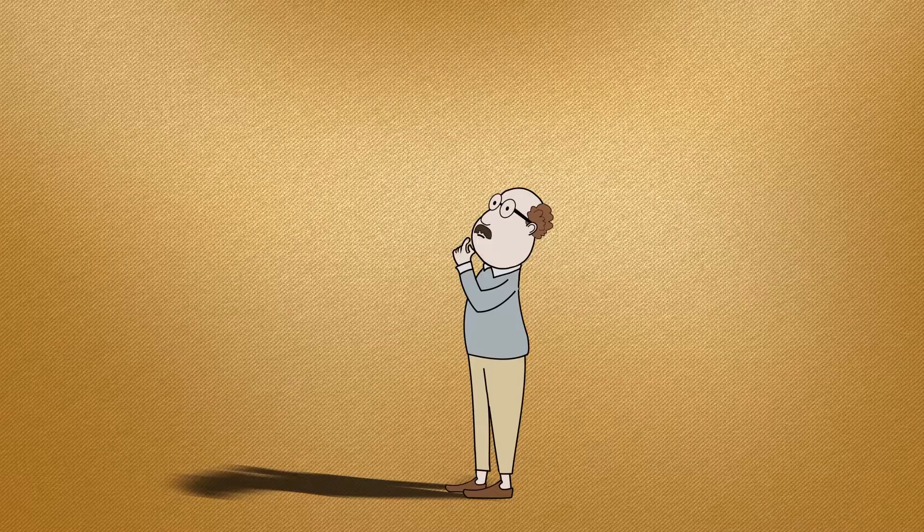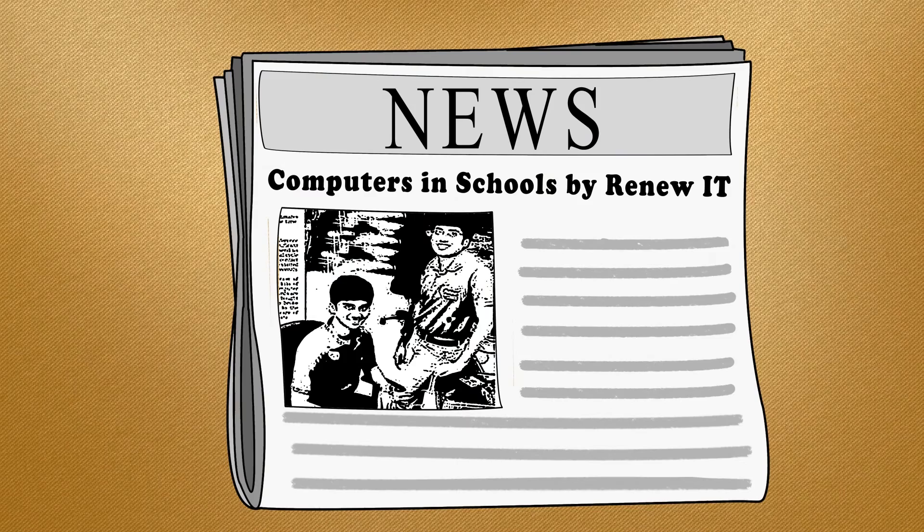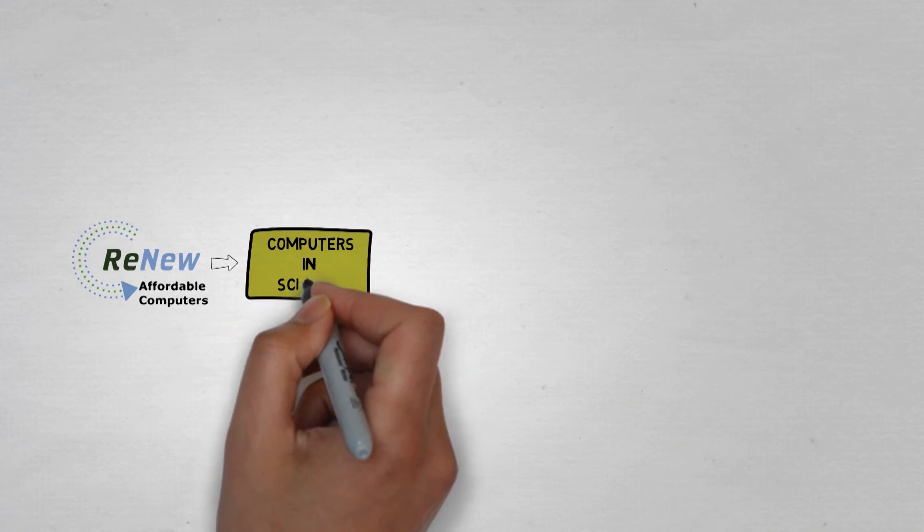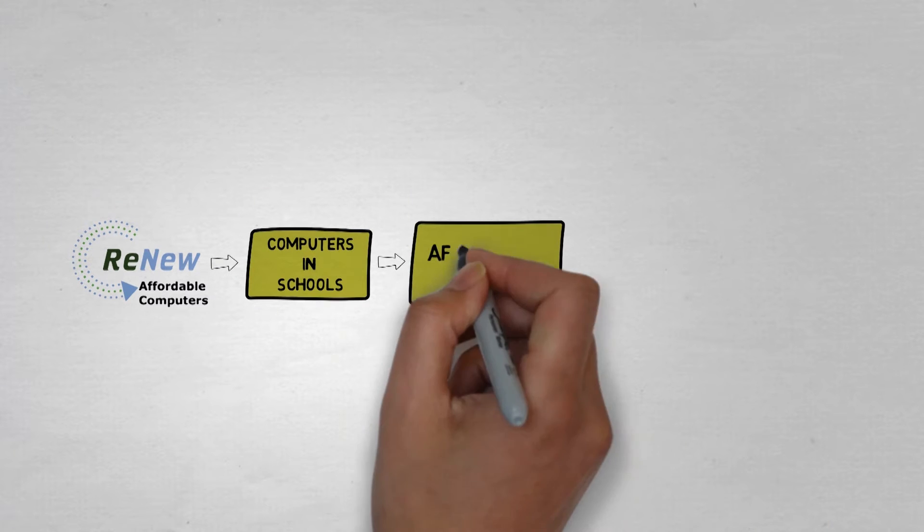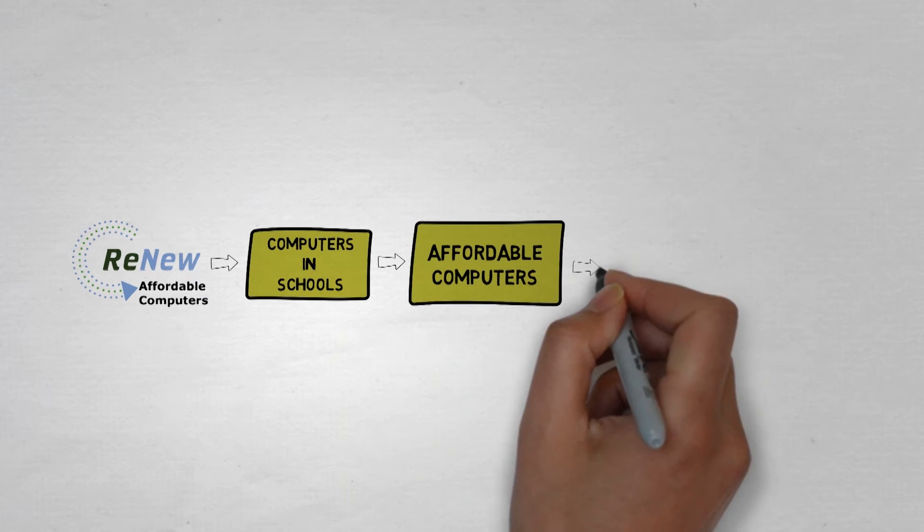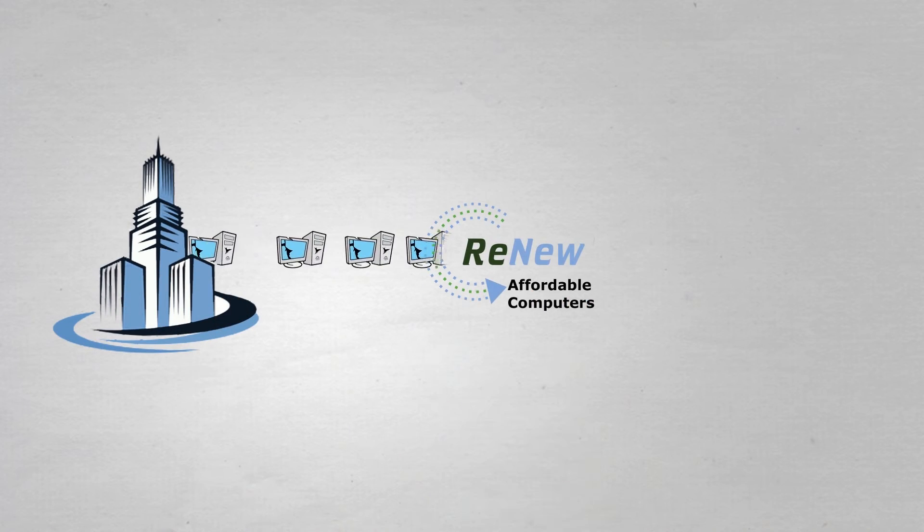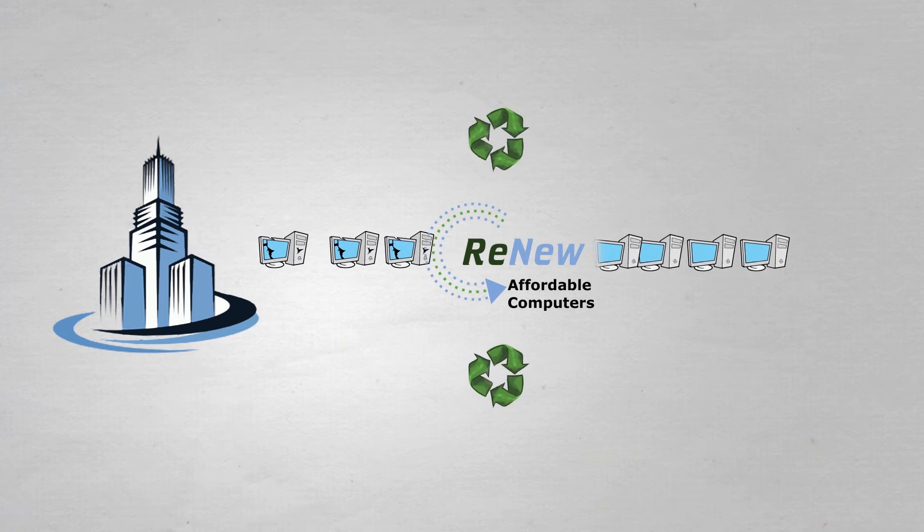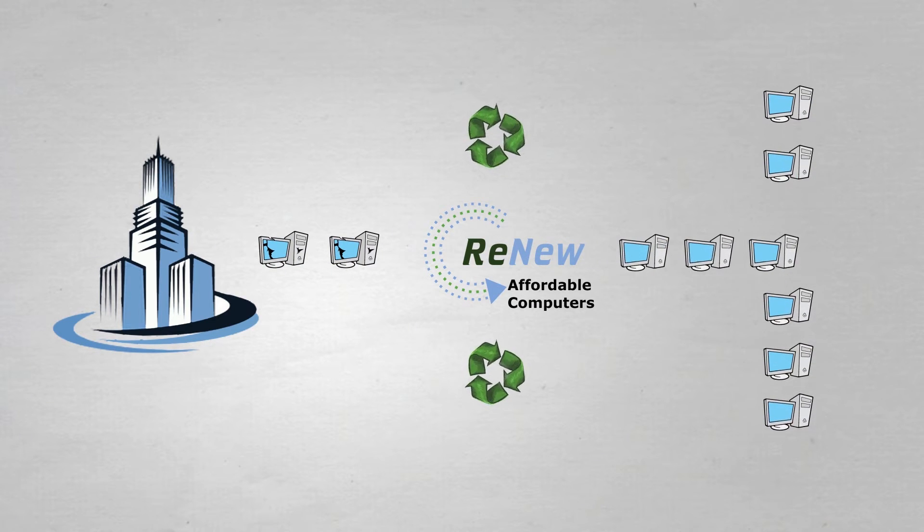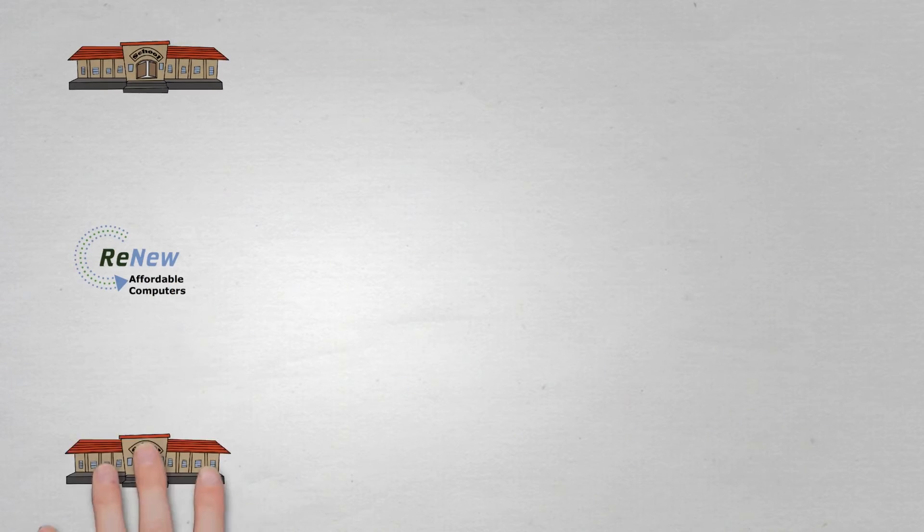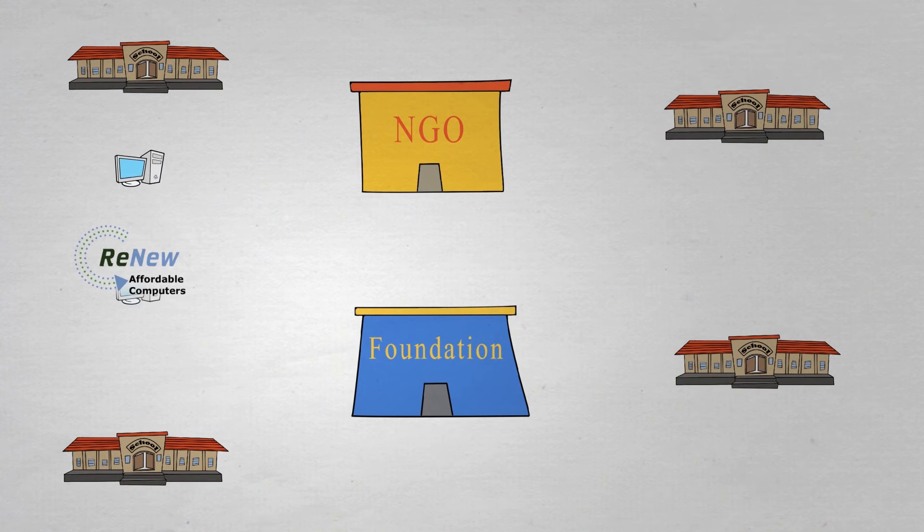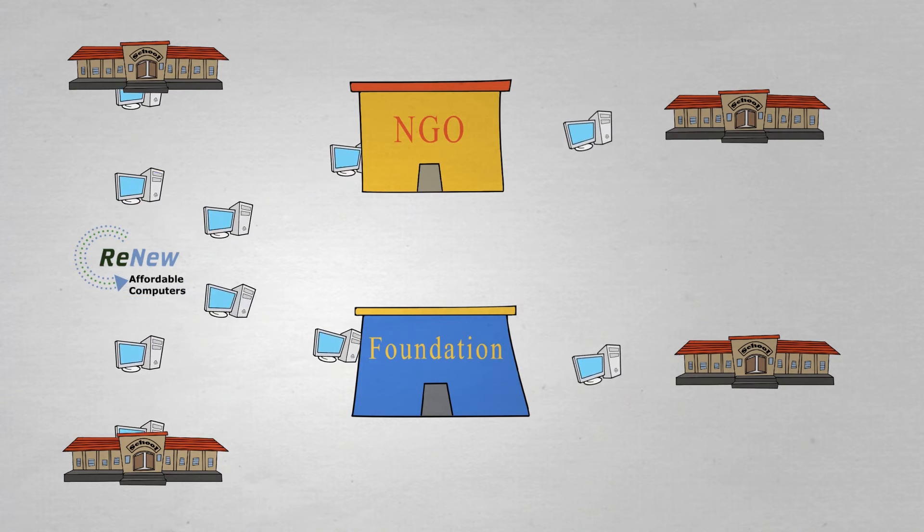So how do we get affordable computers for our students? Check this out. Computers in Schools, an initiative by Renew IT, aims to provide affordable computers for all schools in the country. They source old and redundant computers from large corporates, wipe out all the data on the hard drive and make them thoroughly functional again. These refurbished computers are then provided directly or through NGOs to schools from as low as 4,500 rupees onwards.